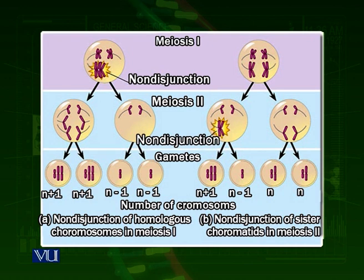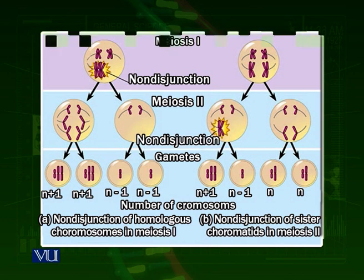So this is non-disjunction. If these unequally distributed chromosomes in the gametes combine with a normal egg or sperm and are fertilized to make a zygote, the individual which is formed will not be normal. This results in different types of diseases at birth.